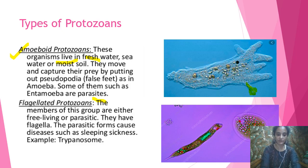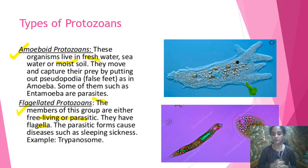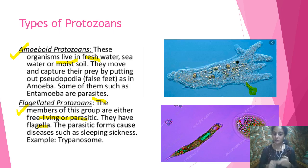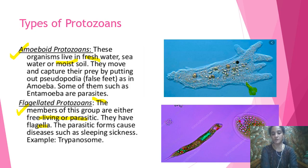The next sub-group is flagellated protozoans. Their main identifying character is the presence of flagella. Some are free-living and some are parasitic. An example of a parasitic flagellated protozoan is Trypanosoma, which causes sleeping sickness.